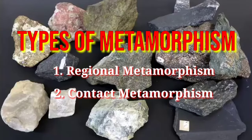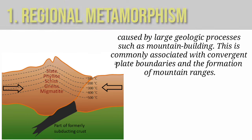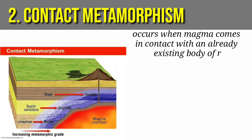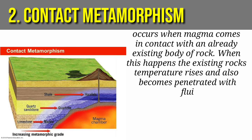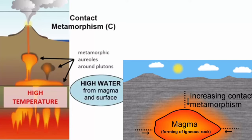There are two types of metamorphism: regional metamorphism and contact metamorphism. Regional metamorphism is caused by large geologic processes such as mountain building and is commonly associated with convergent plate boundaries. It usually produces foliated rocks such as gneiss and schist. Contact metamorphism occurs when magma comes in contact with an already existing body of rock, causing the existing rock's temperature to rise and become penetrated with fluid from the magma. The area affected is usually small — from 1 to 10 kilometers. Contact metamorphism produces non-foliated rocks such as marble, quartzite, and hornfels.